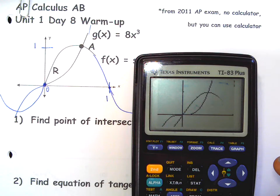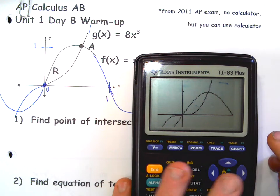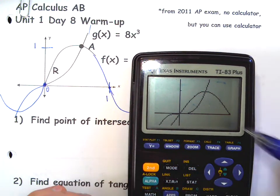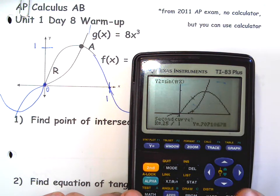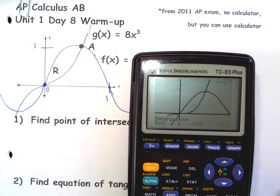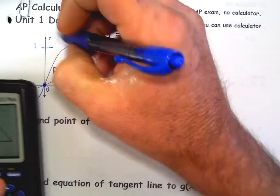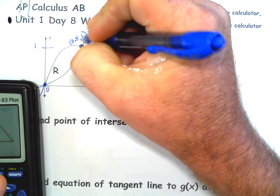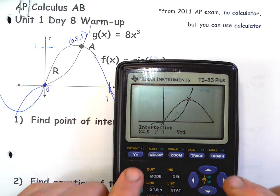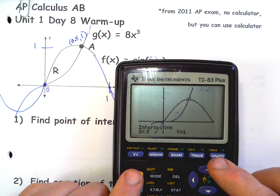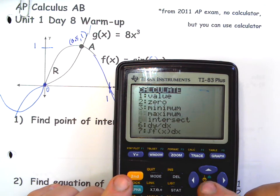Okay, so we're going to find this intersection right here. Second calc, number five intersect. First curve, second curve, guess around 0.5 with the cursor, and it is actually exactly 0.5 comma 1 according to this. Now if we had asked to find it and gave a different guess it might be a little different. Let's try it again just to see if it gives us something different. First curve, second curve, 0.4, takes a little bit, gives the same answer.